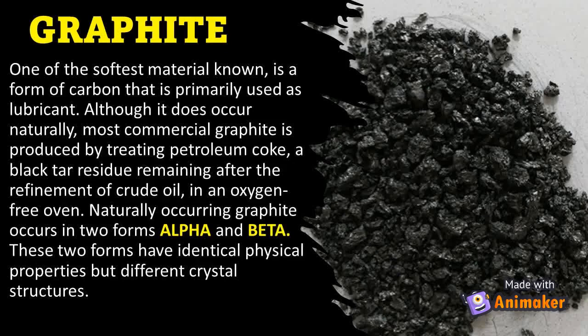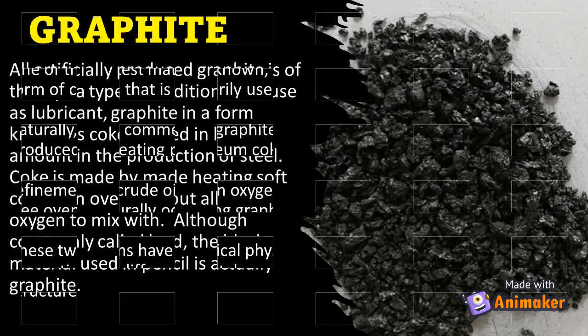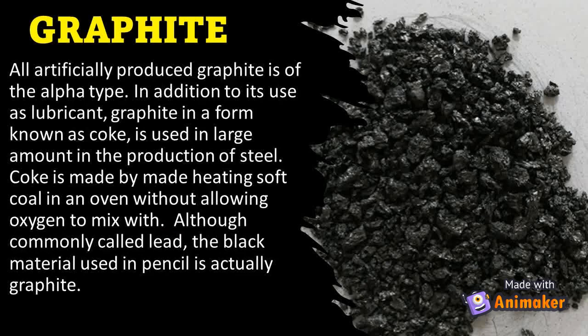Graphite, one of the softest materials known, is a form of carbon that is primarily used as a lubricant. Although it does occur naturally, most commercial graphite is produced by treating petroleum coke, a black tar residue remaining after the refinement of crude oil, in an oxygen-free oven. Naturally occurring graphite occurs in two forms, alpha and beta, which have identical physical properties but different crystal structures. All artificially produced graphite is of the alpha type.